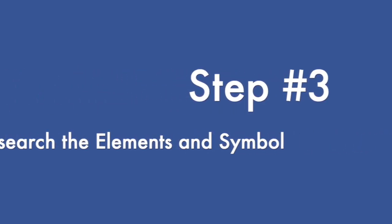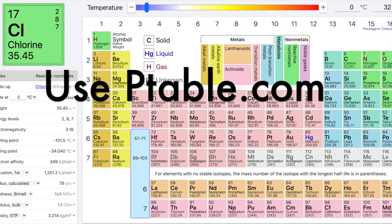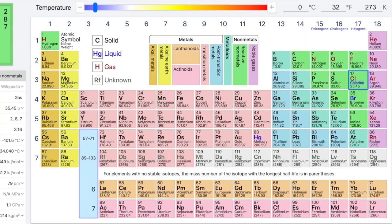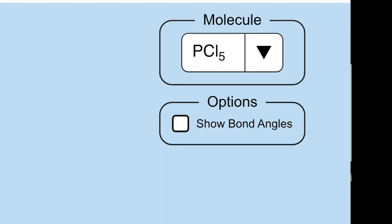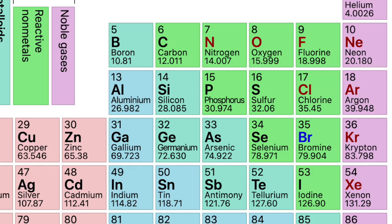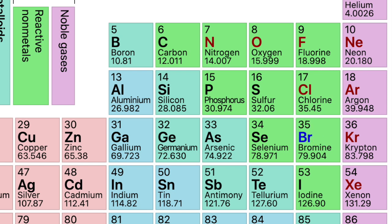We're now ready to research the elements and symbols that make up this molecule. Go to ptable.com and find the two symbols that were shown on the simulator. In my case I have a P and a CL. When you find them on the periodic table, they'll tell you the names of the atoms that make up your molecule. The first symbol I located was P, which stands for phosphorus. The second symbol was CL, which stands for chlorine. So my molecule is made up of phosphorus and chlorine.